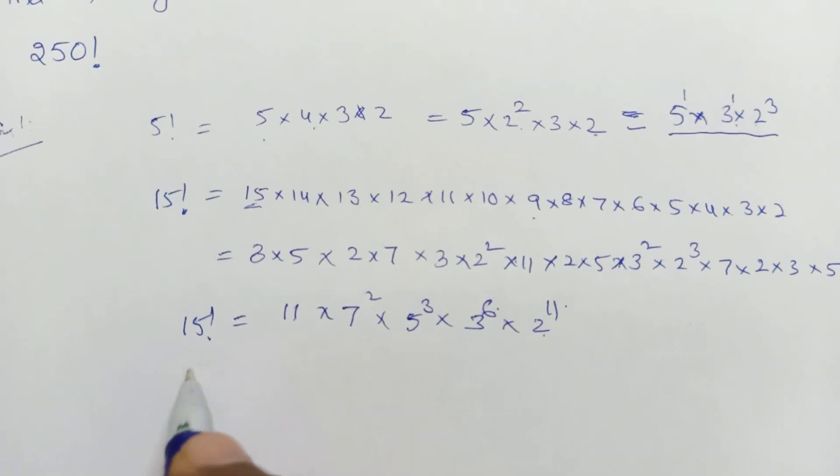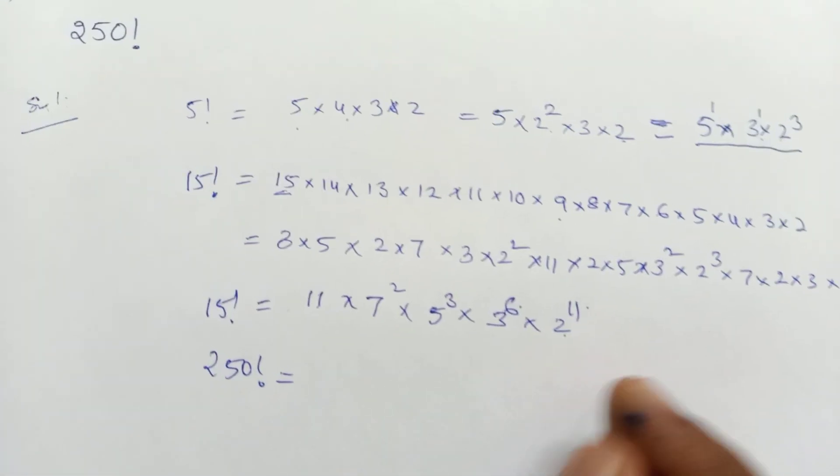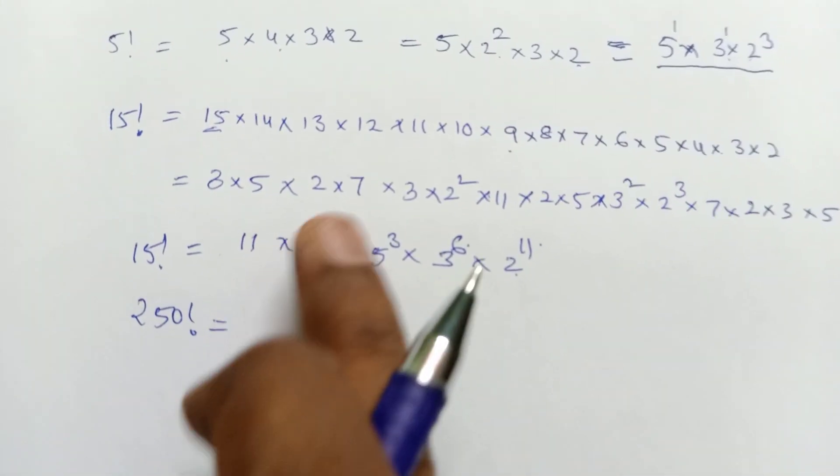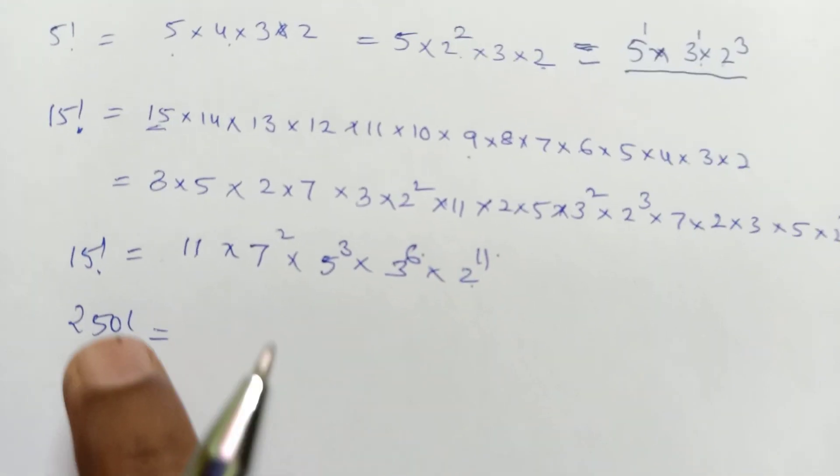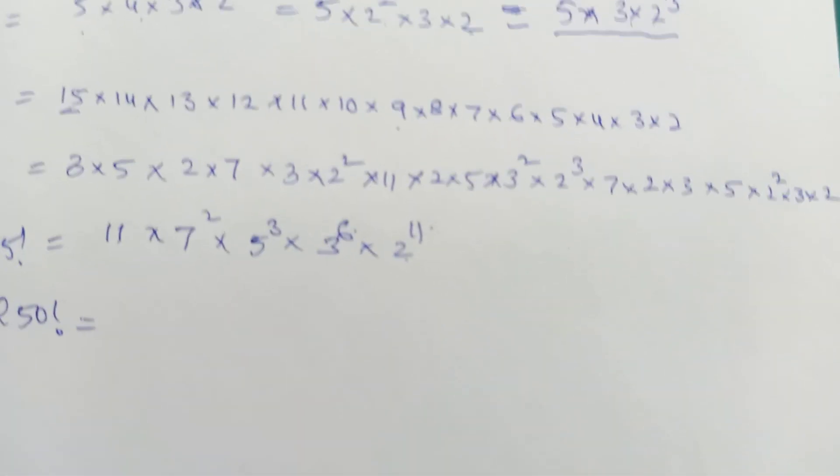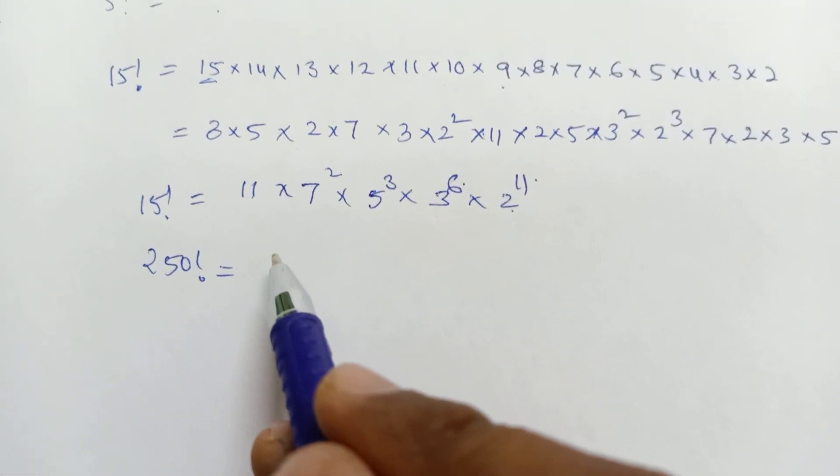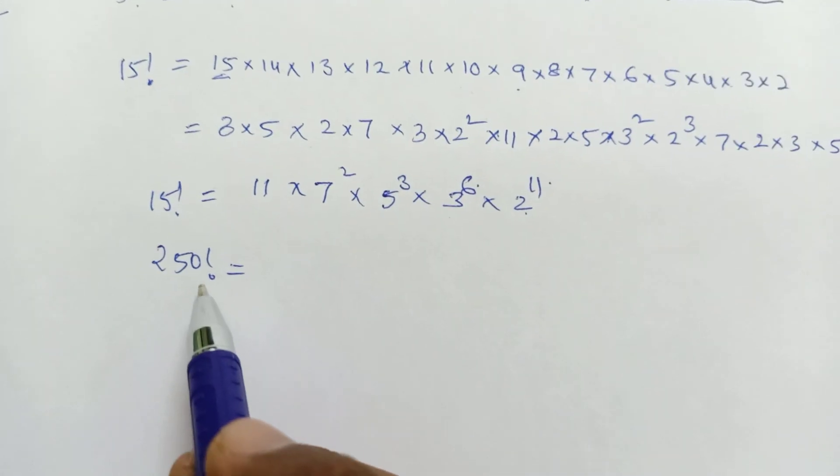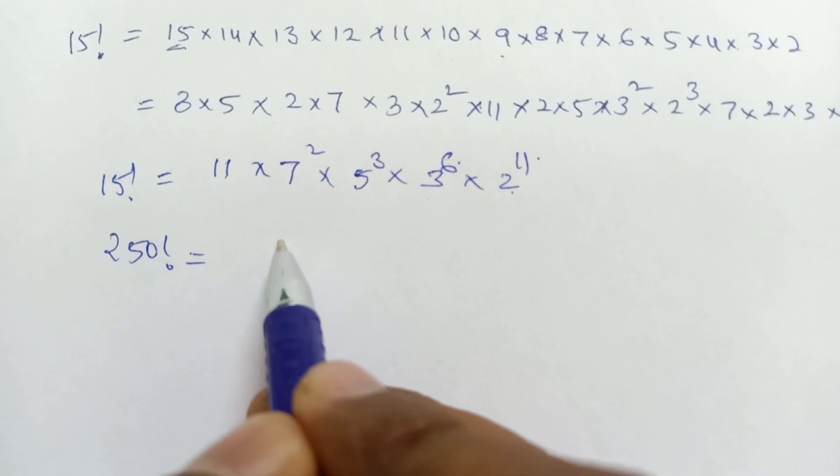Now our question is: in 250 factorial, what is the power of 7? Just like we had 7 squared here in 15 factorial, in 250 factorial what will be the power of 7? For any factorial, for any prime number, we can use this method.